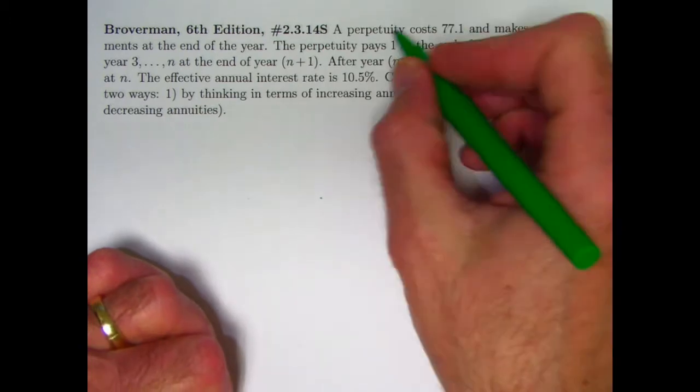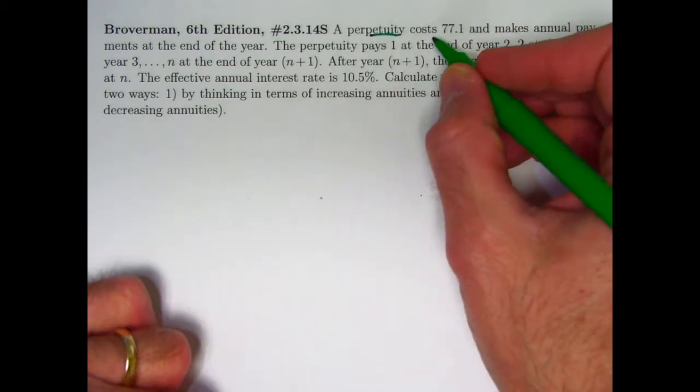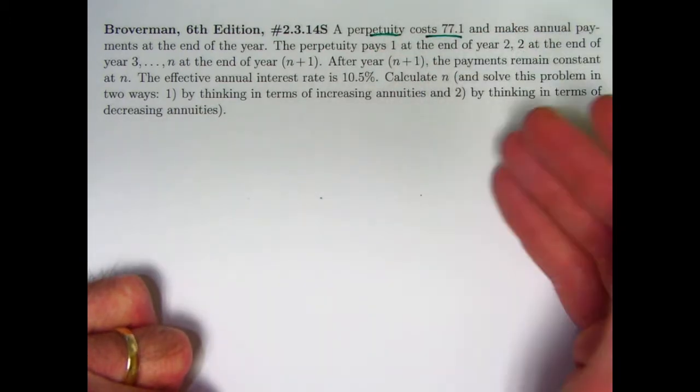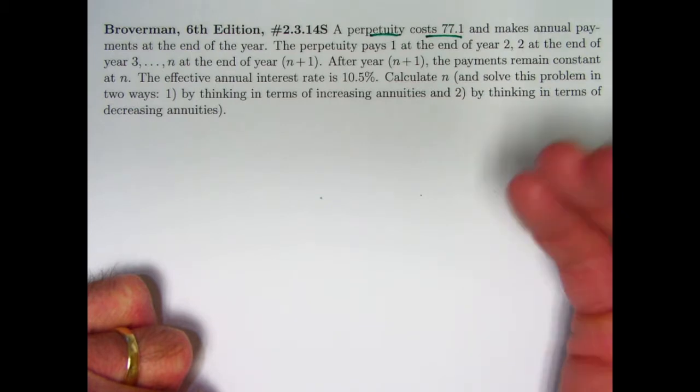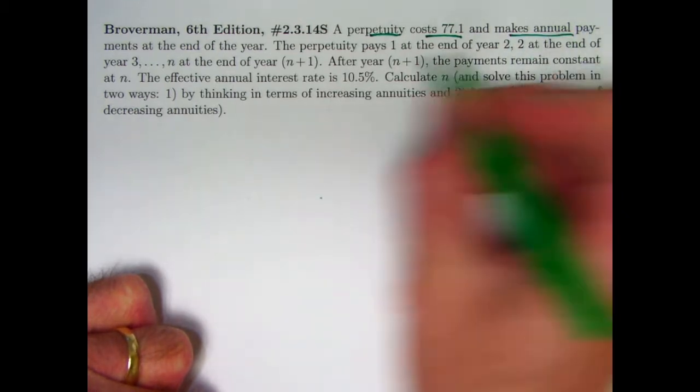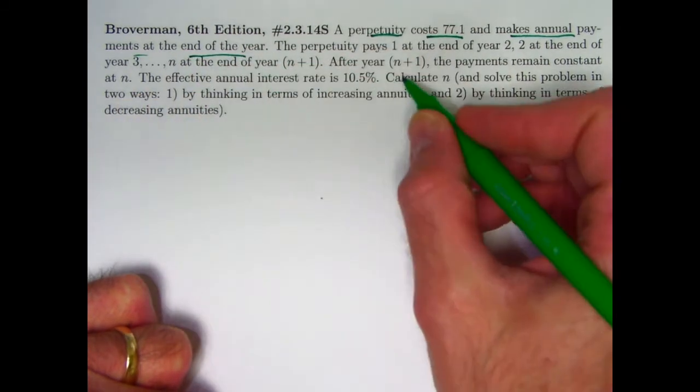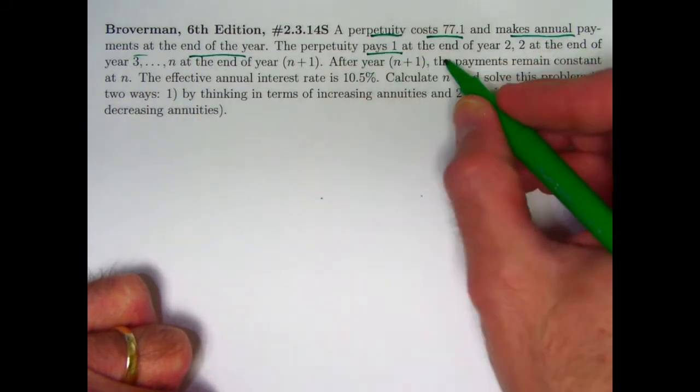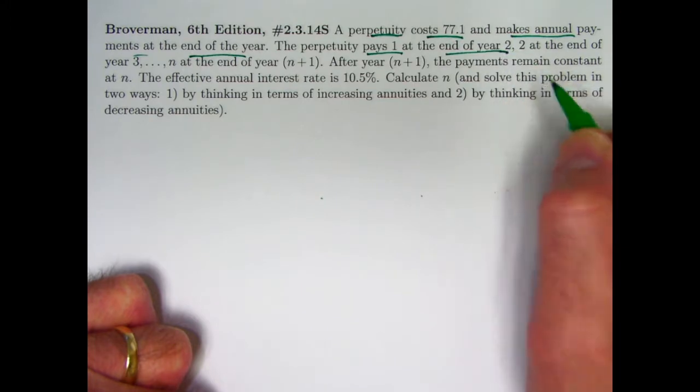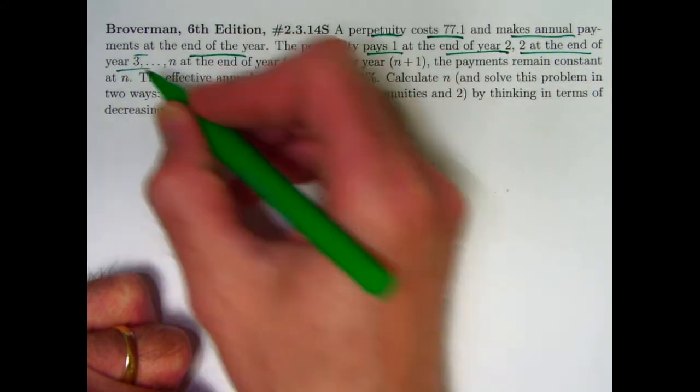Here's the problem statement. We've got a perpetuity, an annuity that goes on forever. It costs 77.1, so that would be its present value right now. You'd have to pay that amount to get the annuity. It makes annual payments at the end of the year. The perpetuity pays 1 at the end of year 2, not the end of year 1. Careful, it's the end of year 2. 2 at the end of year 3, etc.